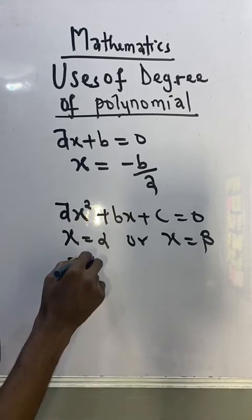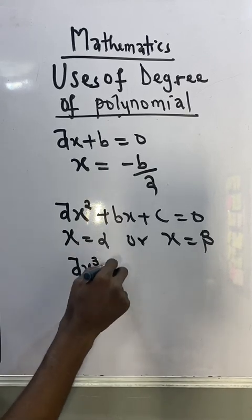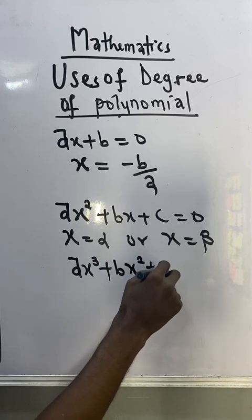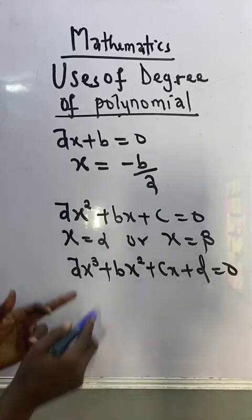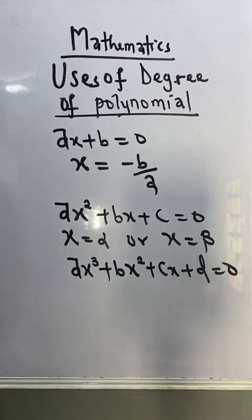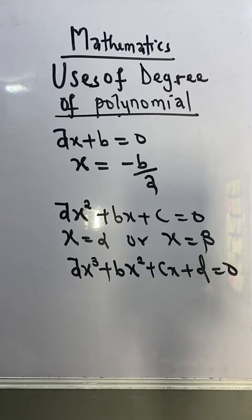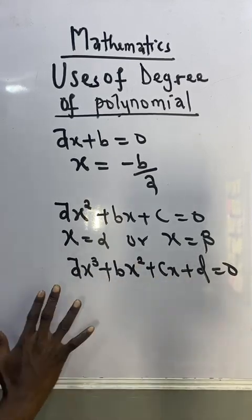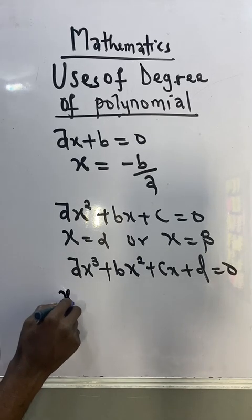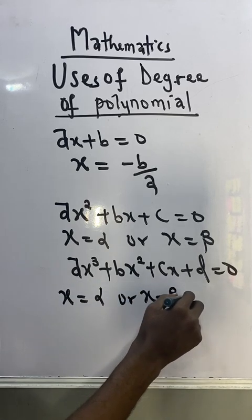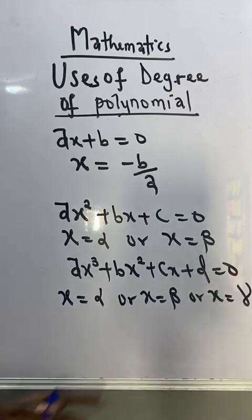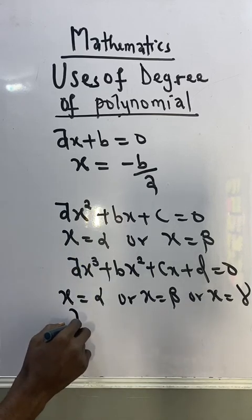Similarly, if we have an equation of degree three, like ax cubed plus bx squared plus cx plus d equal to zero — since the degree is three, we must get three roots or three solutions. That is why our answers at the end of the solution are always of this form: x equal to alpha, or x equal to beta, or x equal to gamma.